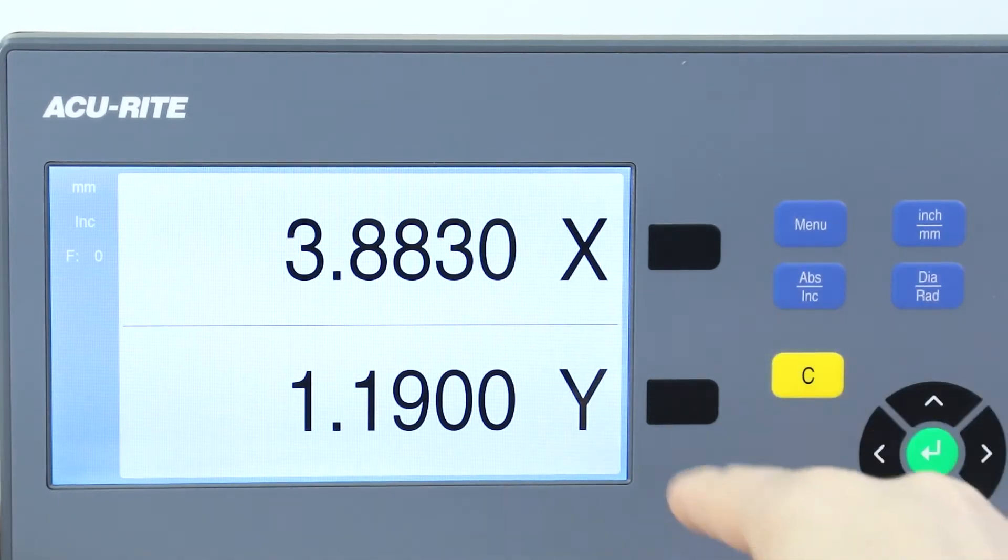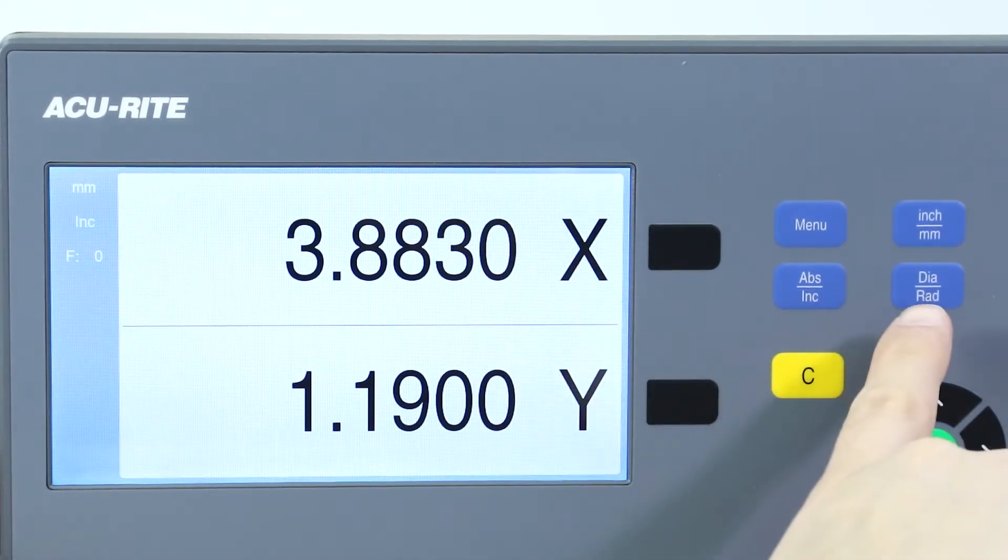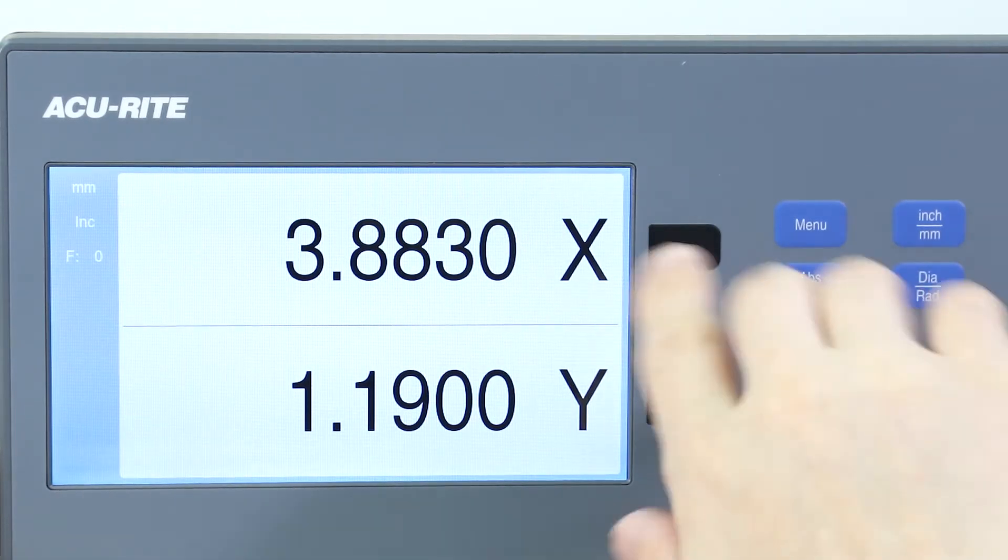If turning is your application, you can instantly switch between radius and diameter by pressing this button right here. Otherwise you can just ignore that one.